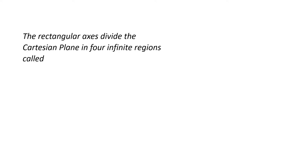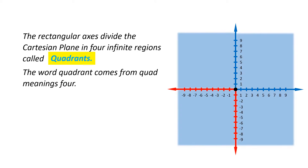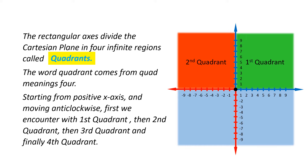The rectangular axes divide the Cartesian plane into four infinite regions called quadrants. The word quadrant comes from 'quad' meaning four. Starting from the positive x-axis and moving anti-clockwise, we encounter the first quadrant, then the second quadrant, then the third quadrant, and finally the fourth quadrant.